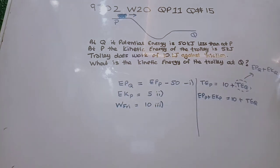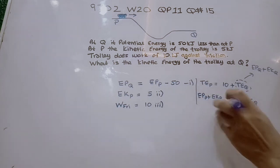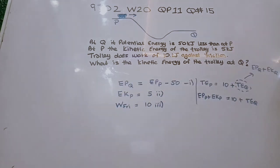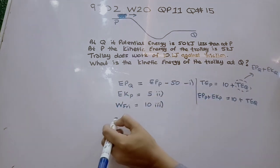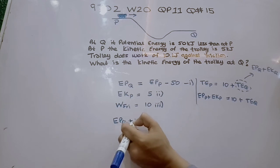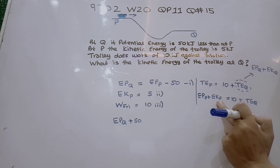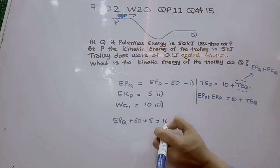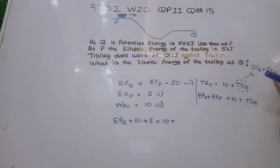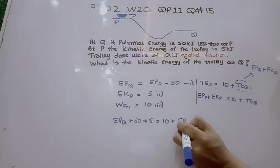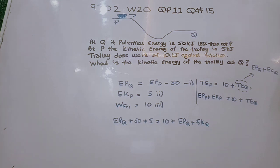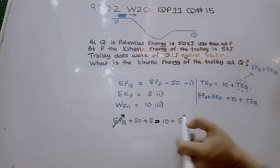The potential energy at P can be written as EPQ plus 50, using equation one. So substituting: EPQ plus 50 plus EKP equals 10 plus EPQ plus EKQ. The kinetic energy at P is 5, so we have EPQ plus 50 plus 5 equals 10 plus EPQ plus EKQ. We can cancel EPQ from both sides.